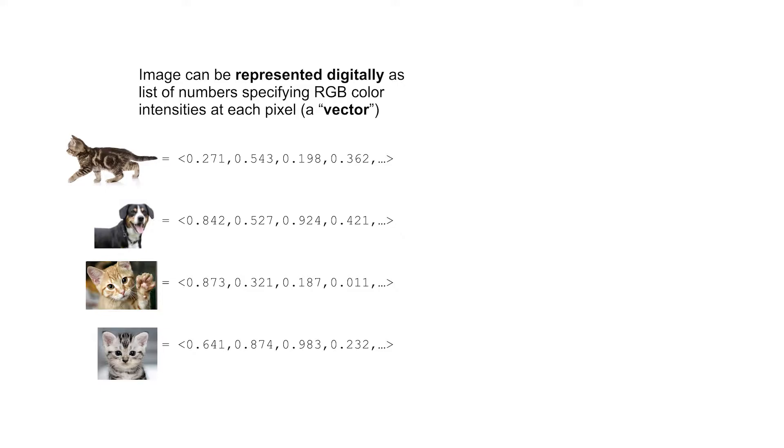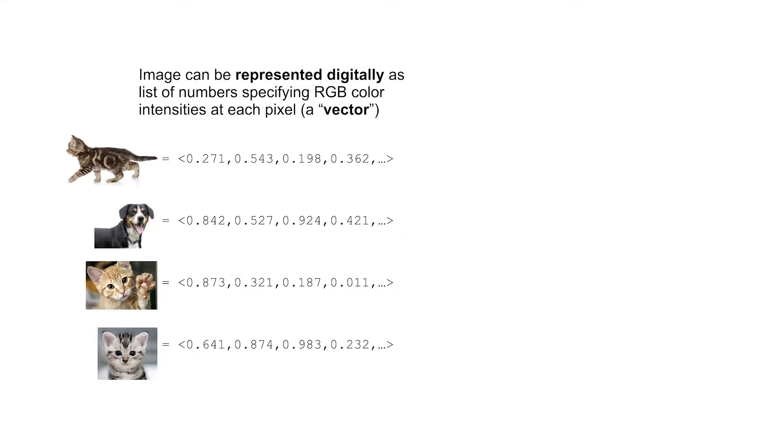These vectors can be thought of as points in a very high dimensional space. For example, if you have a thousand pixels, and each pixel has three colors, that would be a point in three thousand dimensional space.